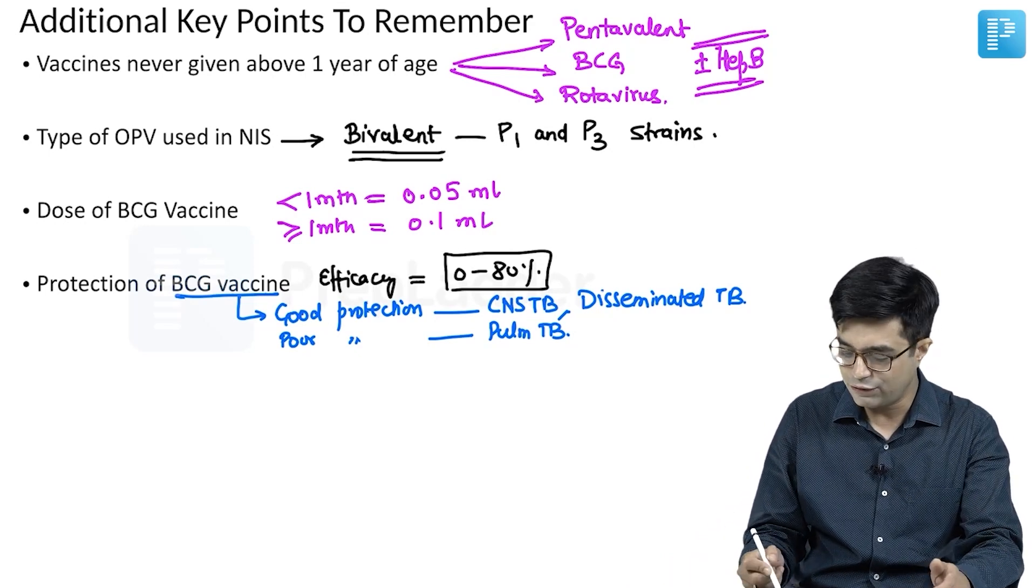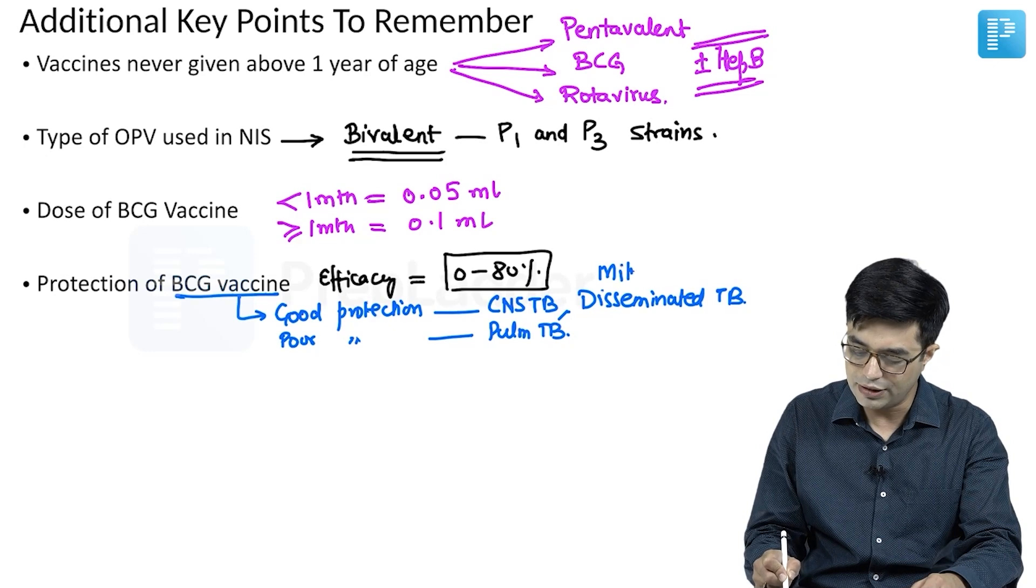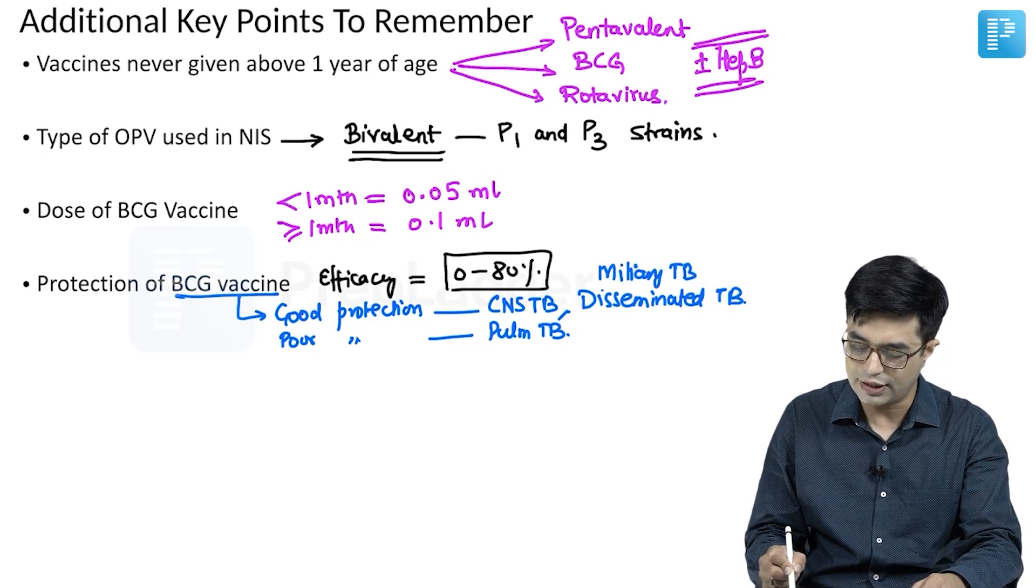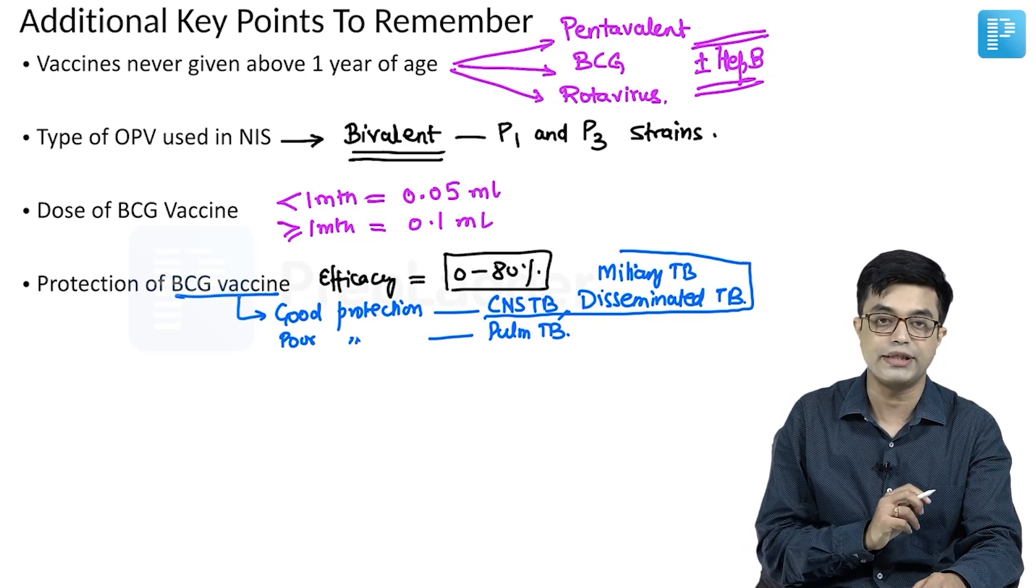So CNS TB, disseminated TB, and miliary TB will also be included where there is relatively good protection. These are the three areas where good protection is seen.